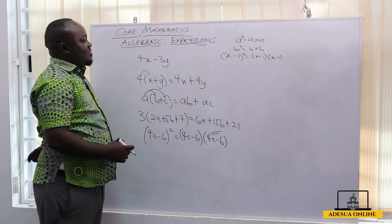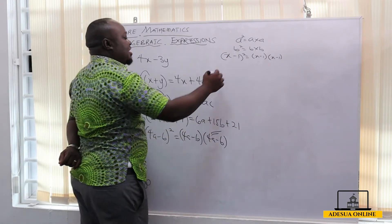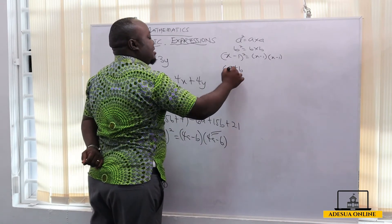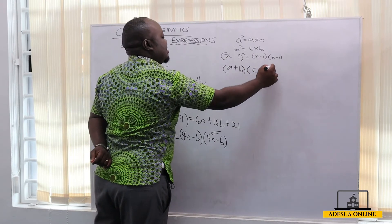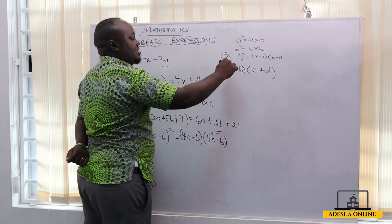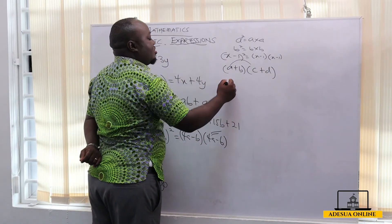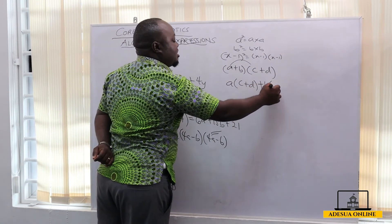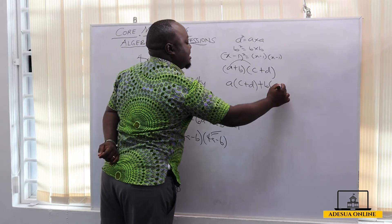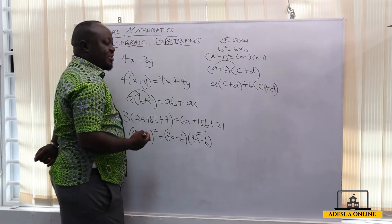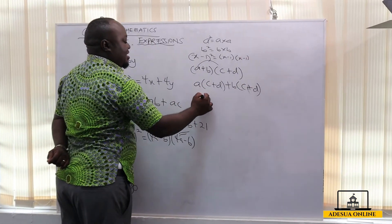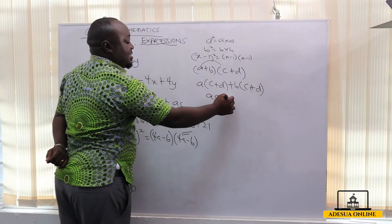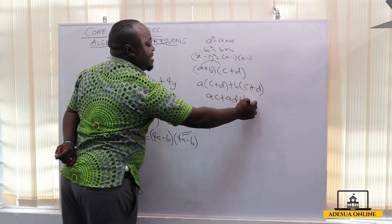When I have two linear expressions and I want to expand them, assuming I have a plus b multiplying c plus d, we do the normal expansion: a multiply c, so we have a multiplying c plus d, plus b also multiplying c plus d. We do the necessary expansions: ac plus ad plus bc plus bd.